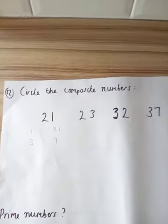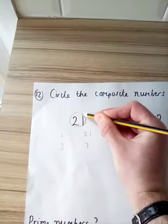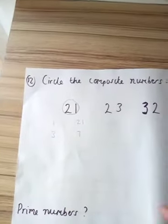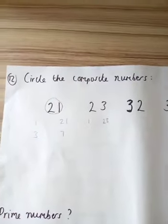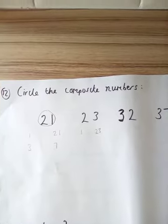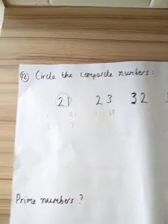Okay, so because 21 is not a prime number, it is a composite number. So that is one we need to circle because it is not prime. 23: well, we know it has the factors 1 and 23. Are there any other ways to make 23 by multiplying any of the whole numbers? Does 23 appear in any other times table? No, because 23 is a prime number. So 23 we would not circle on this question because it is not a composite number.